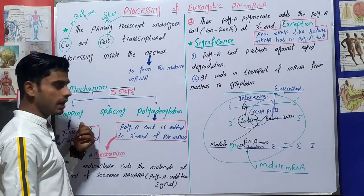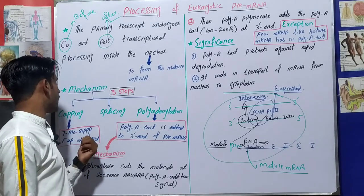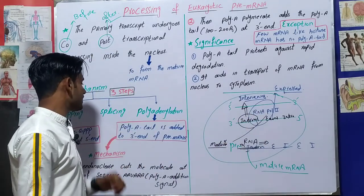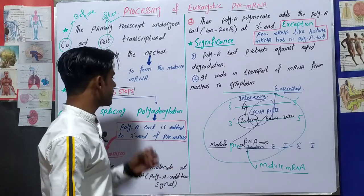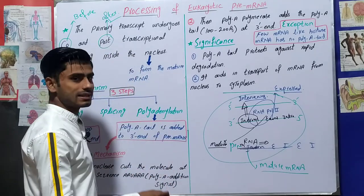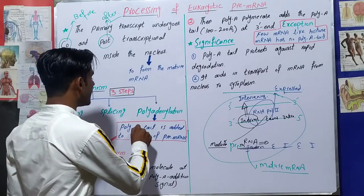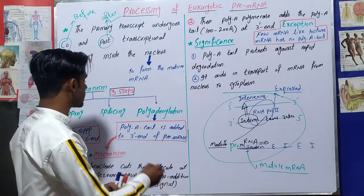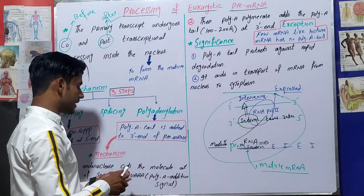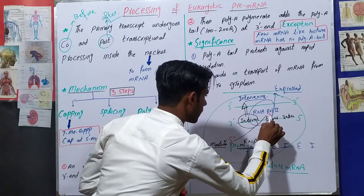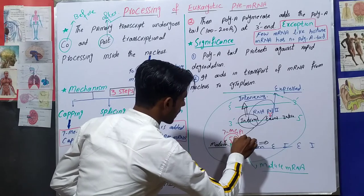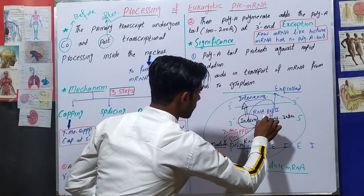In the previous lecture we discussed capping, where we add a 7-methylguanosine cap at the 5' end of the pre-messenger RNA. Splicing will be discussed in the next lecture. In this lecture we will discuss polyadenylation. Polyadenylation is the addition of a poly-A tail to the 3' end of the pre-messenger RNA. So we have a 7-methylguanosine cap at the 5' end and a poly-A tail at the 3' end.